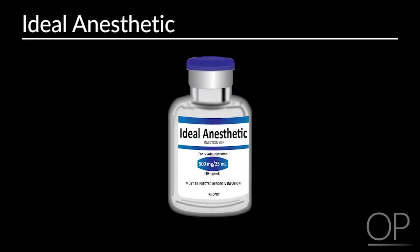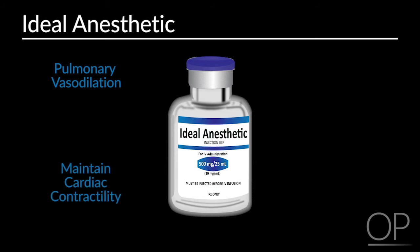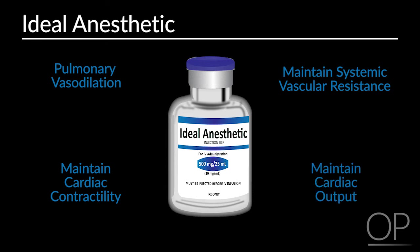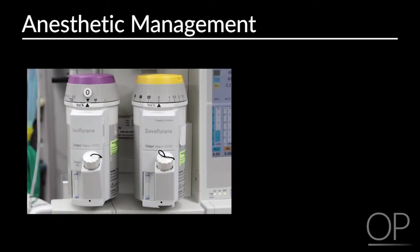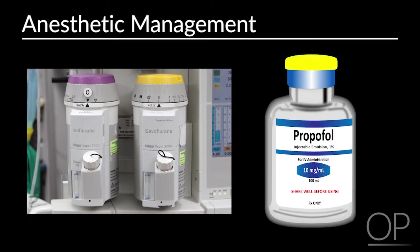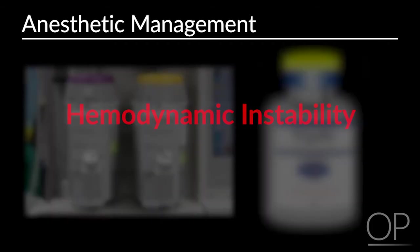The ideal anesthetic for pulmonary hypertension would cause pulmonary vasodilation, maintain cardiac contractility, maintain systemic vascular resistance, and maintain cardiac output. However, an ideal anesthetic for pulmonary hypertension does not exist. Volatile anesthetics and IV anesthetic agents each have good qualities but also have elements that cause hemodynamic instability potentially for patients with pulmonary hypertension.